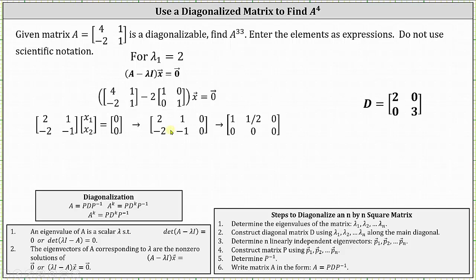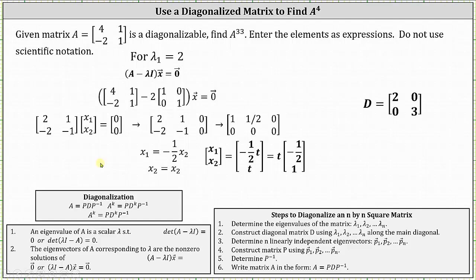We write the augmented matrix and reduce it to row echelon form. Notice there is no pivot in column two, which indicates x two is a free variable. The first row indicates x one plus one half x two equals zero. Solving for x one, we have x one equals negative one half x two, x two equals x two. Letting x two equal t, all eigenvectors are in the form t times the vector negative one half, one. To avoid fractions, let's let t equal two and use the eigenvector negative one, two, for lambda equals two. This means the first column of matrix P is negative one, two.